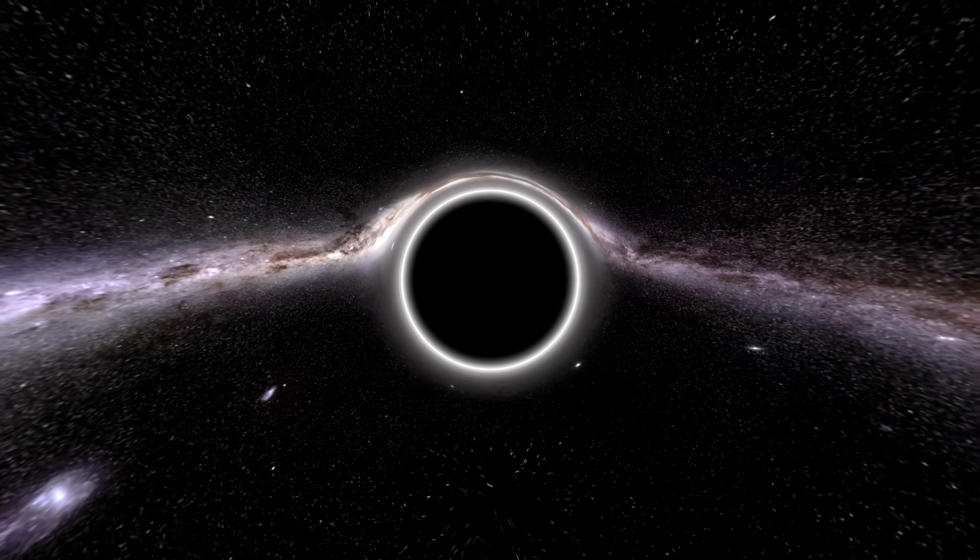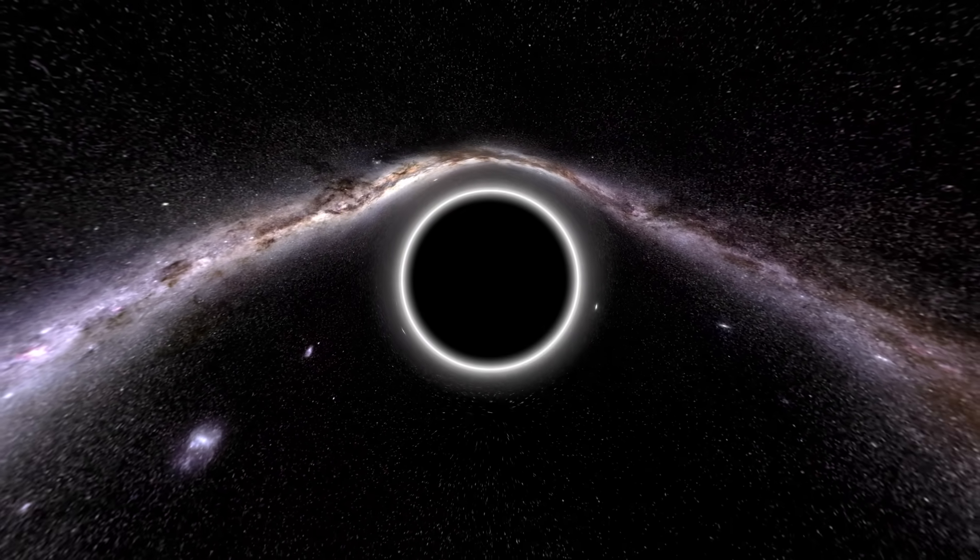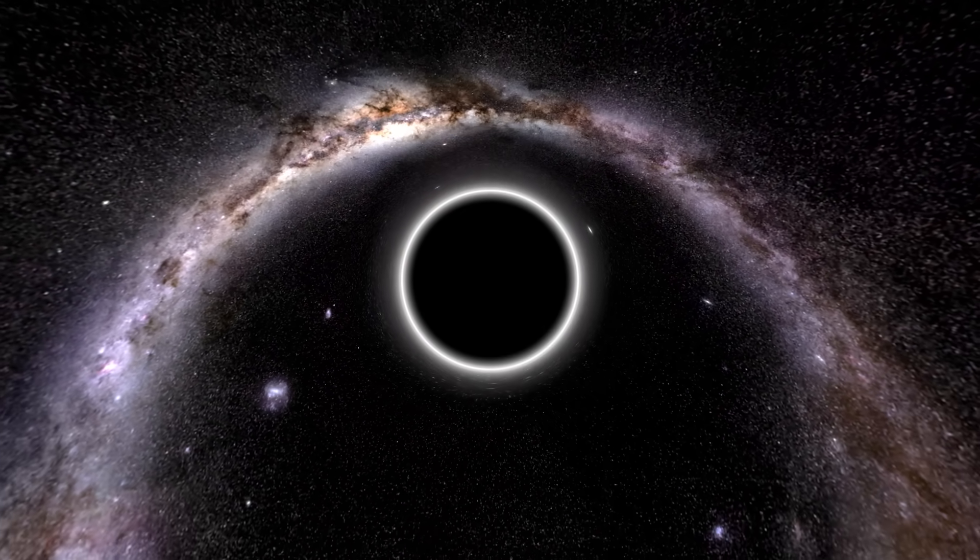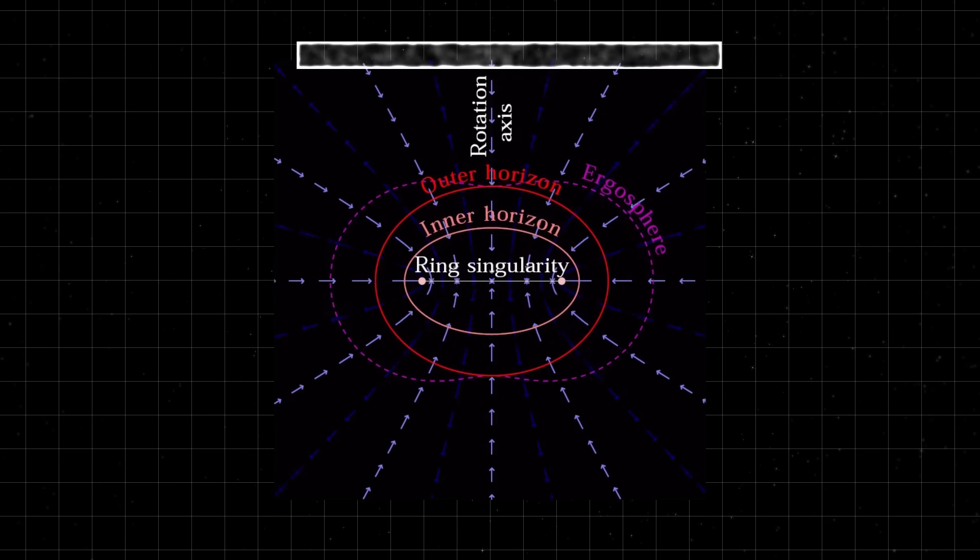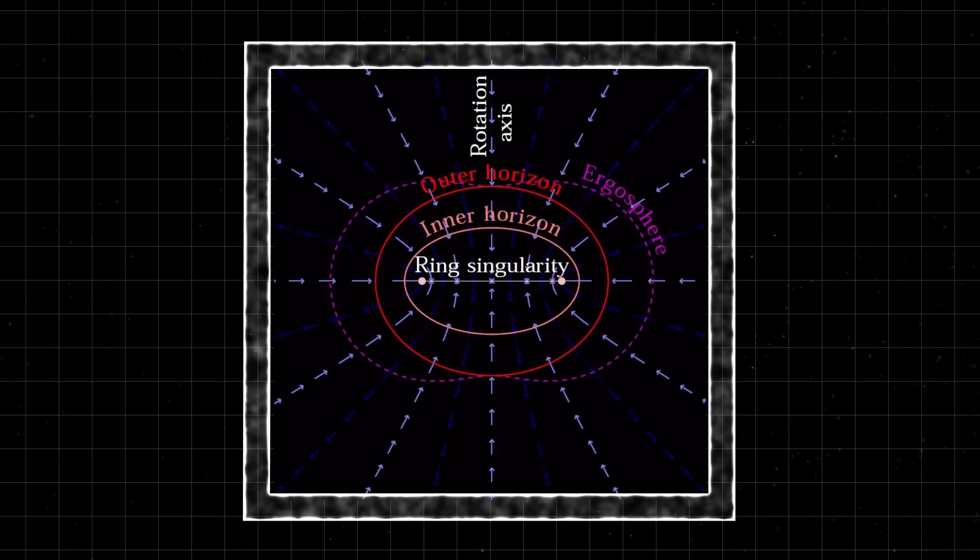These horizons are like invisible walls, marking the regions where the gravitational pull becomes too strong for even light to break free. Rotating black holes also have something called ergospheres, swirling zones surrounding a black hole where space-time itself is dragged along by its rotation faster than the speed of light.